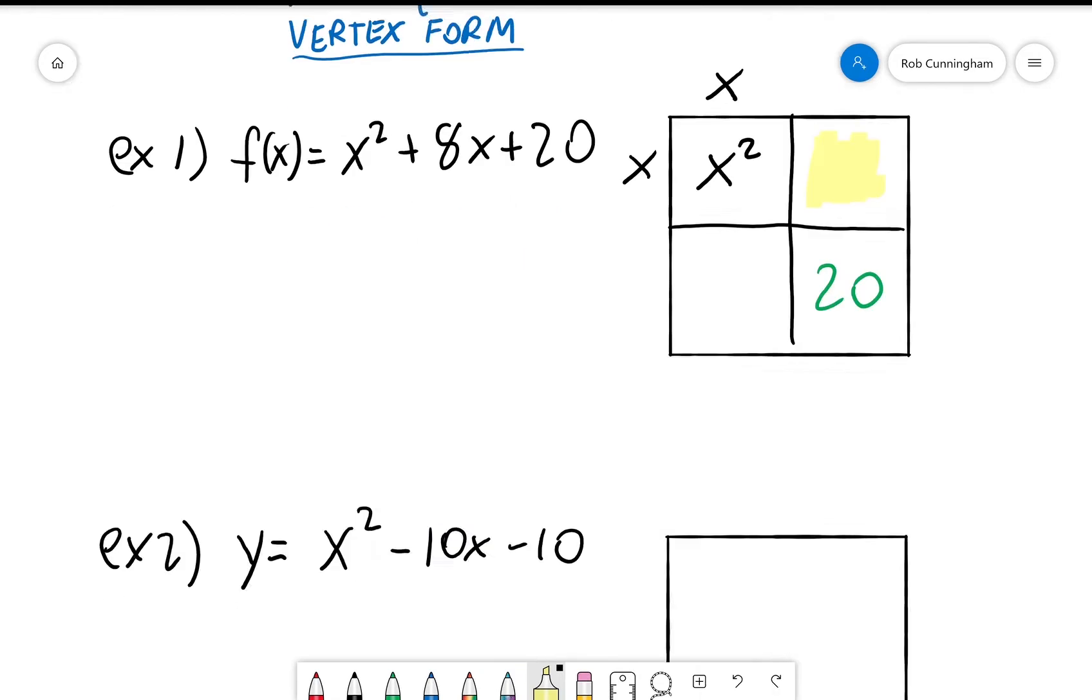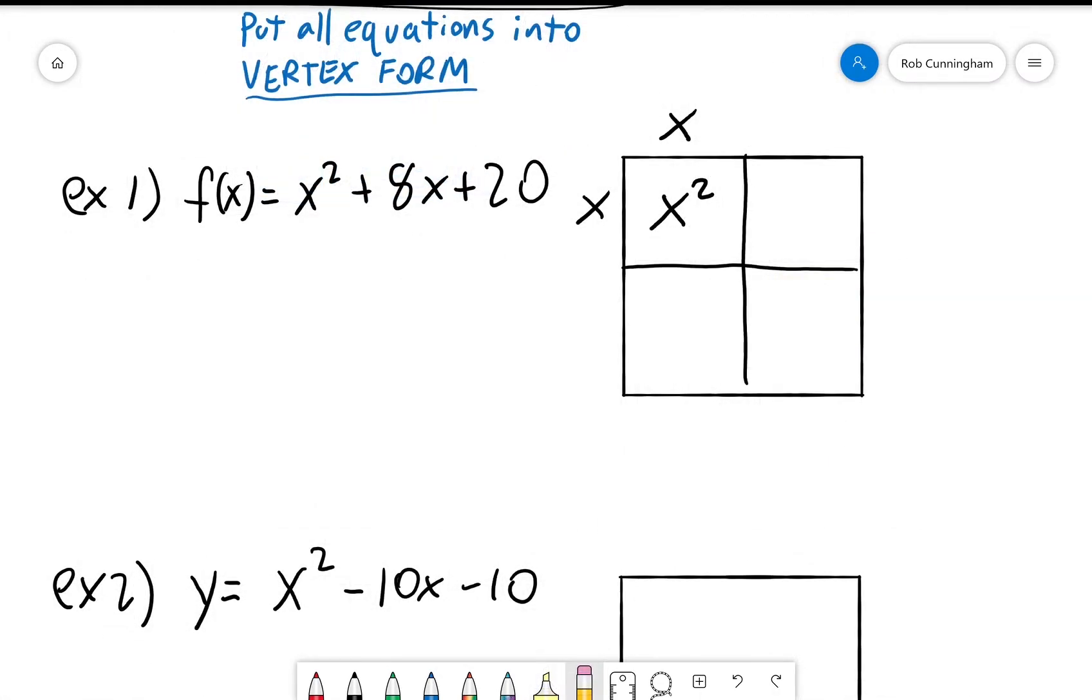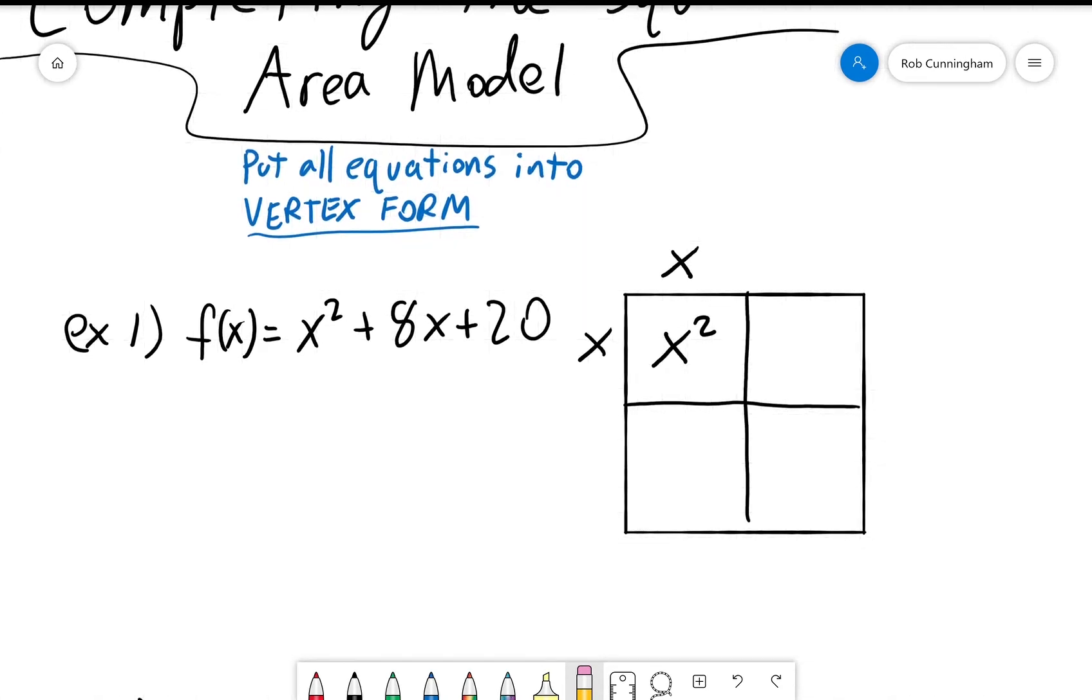That's not what we're doing with completing the square. Instead, what we're going to do is we are going to prioritize making this shape into a square. So this 8x needs to be evenly distributed into these two regions or else it's not a square. So the only way I can make a square is to have 4x here and 4x here. A little bit of division will tell you that this side here is 4. How do I know? Because 4x divided by x is 4.